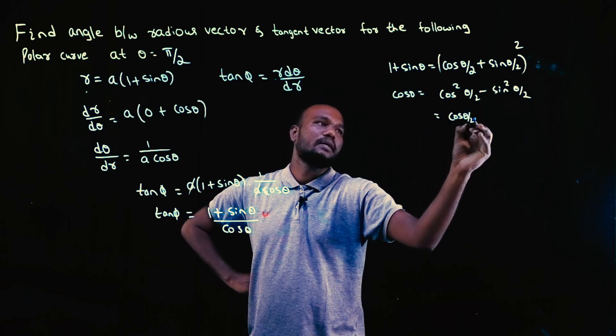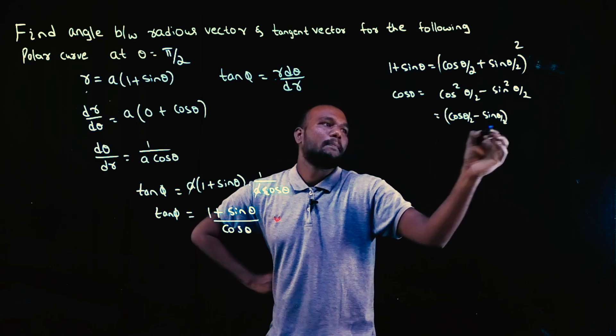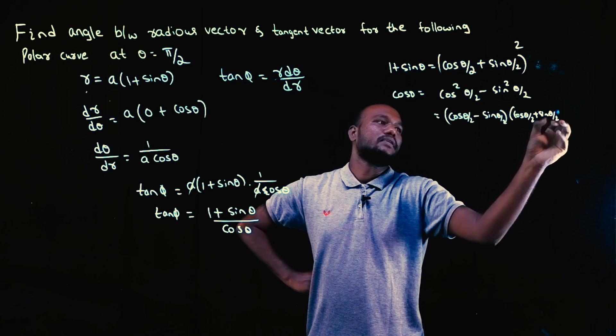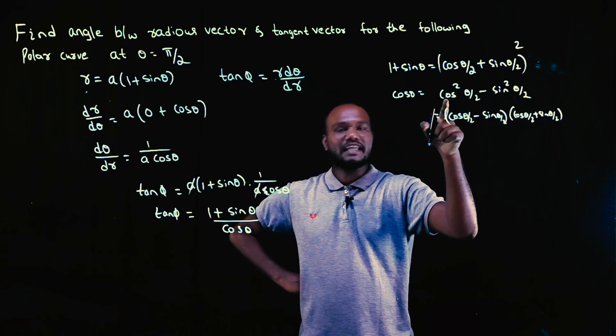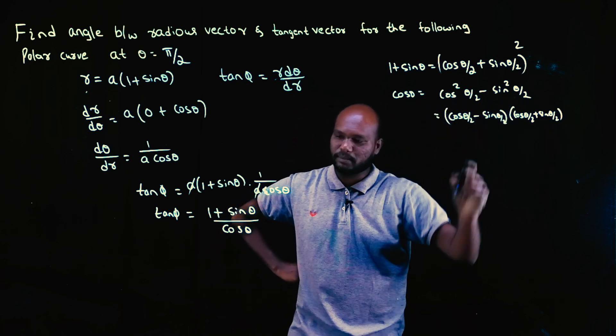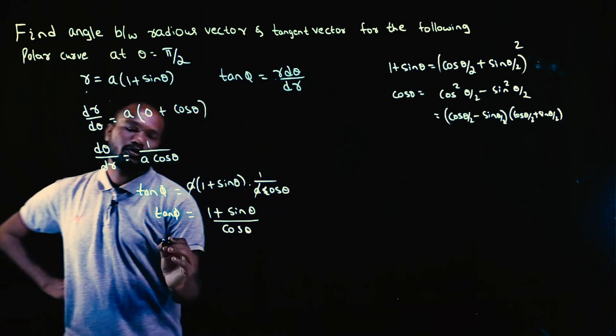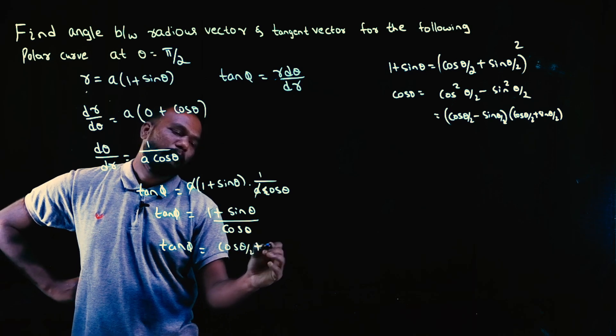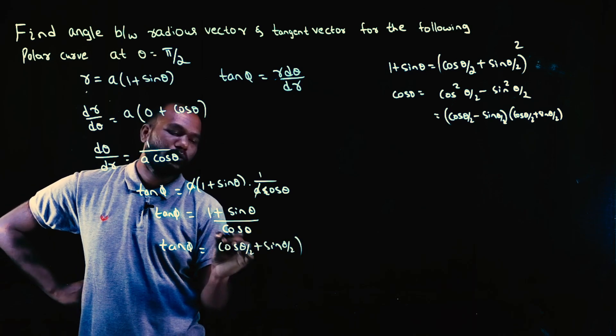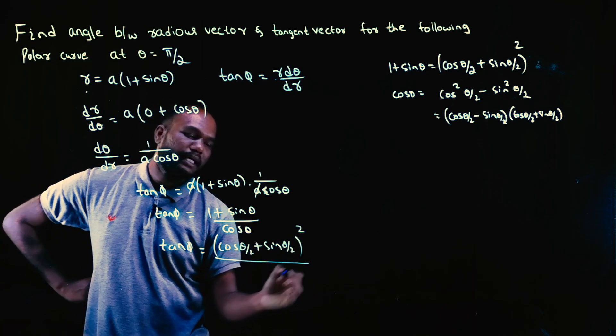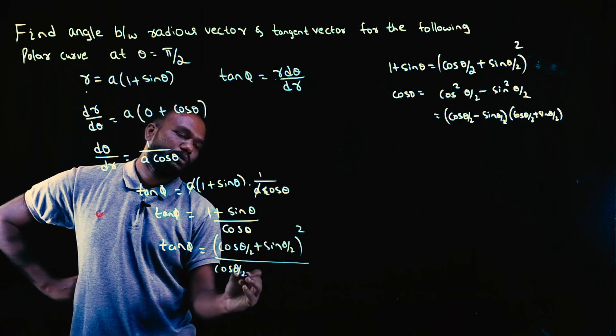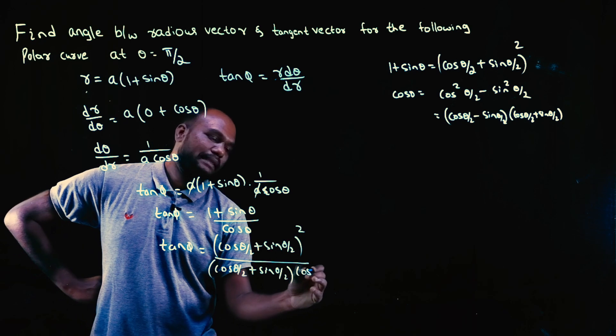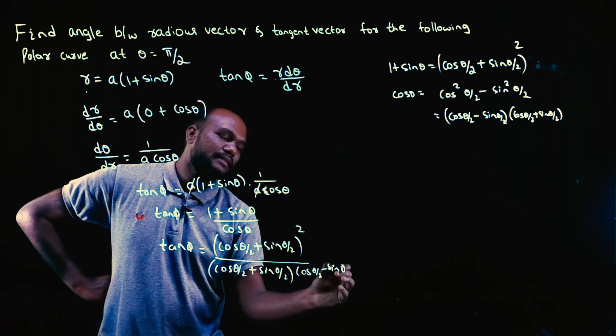So this can be written as (cos θ/2 - sin θ/2) into (cos θ/2 + sin θ/2). a² - b² where a is cos θ/2, b is sin θ/2. So I can substitute this. Tan φ equals 1 + sin θ, which is (cos θ/2 + sin θ/2)² divided by (cos θ/2 + sin θ/2)(cos θ/2 - sin θ/2).